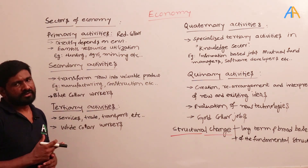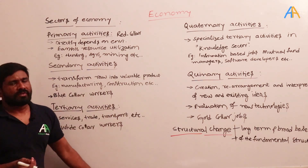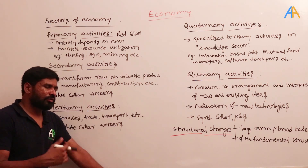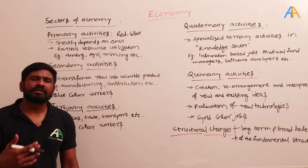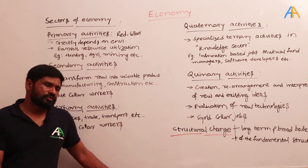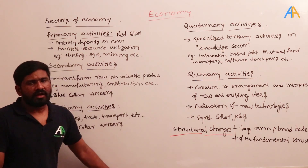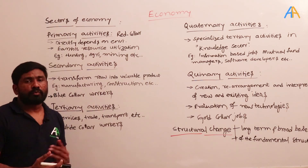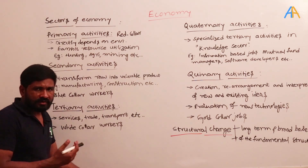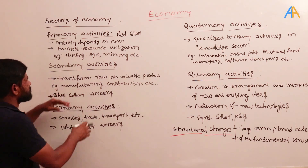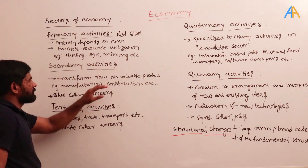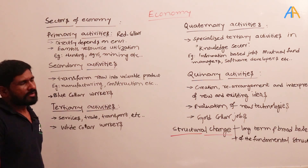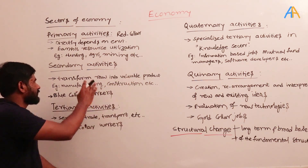Secondary activities: for example, you mine gold or coal, and from that you need to produce electricity. If the gold is not in pure form, you need to process it. That processing happens in a processing industry or manufacturing industry. All these industries come under secondary activities — here the raw material is being converted into a valuable product.